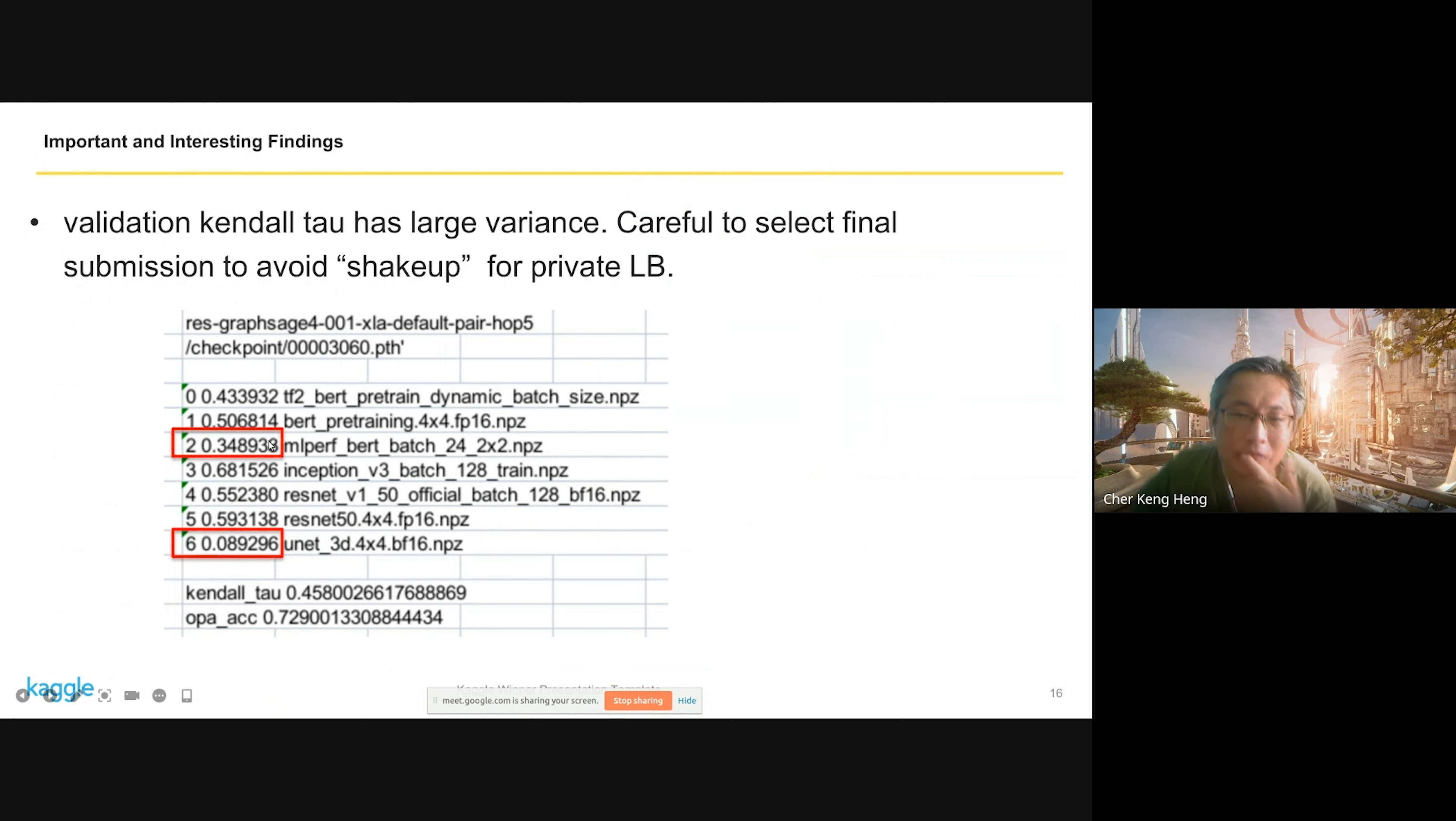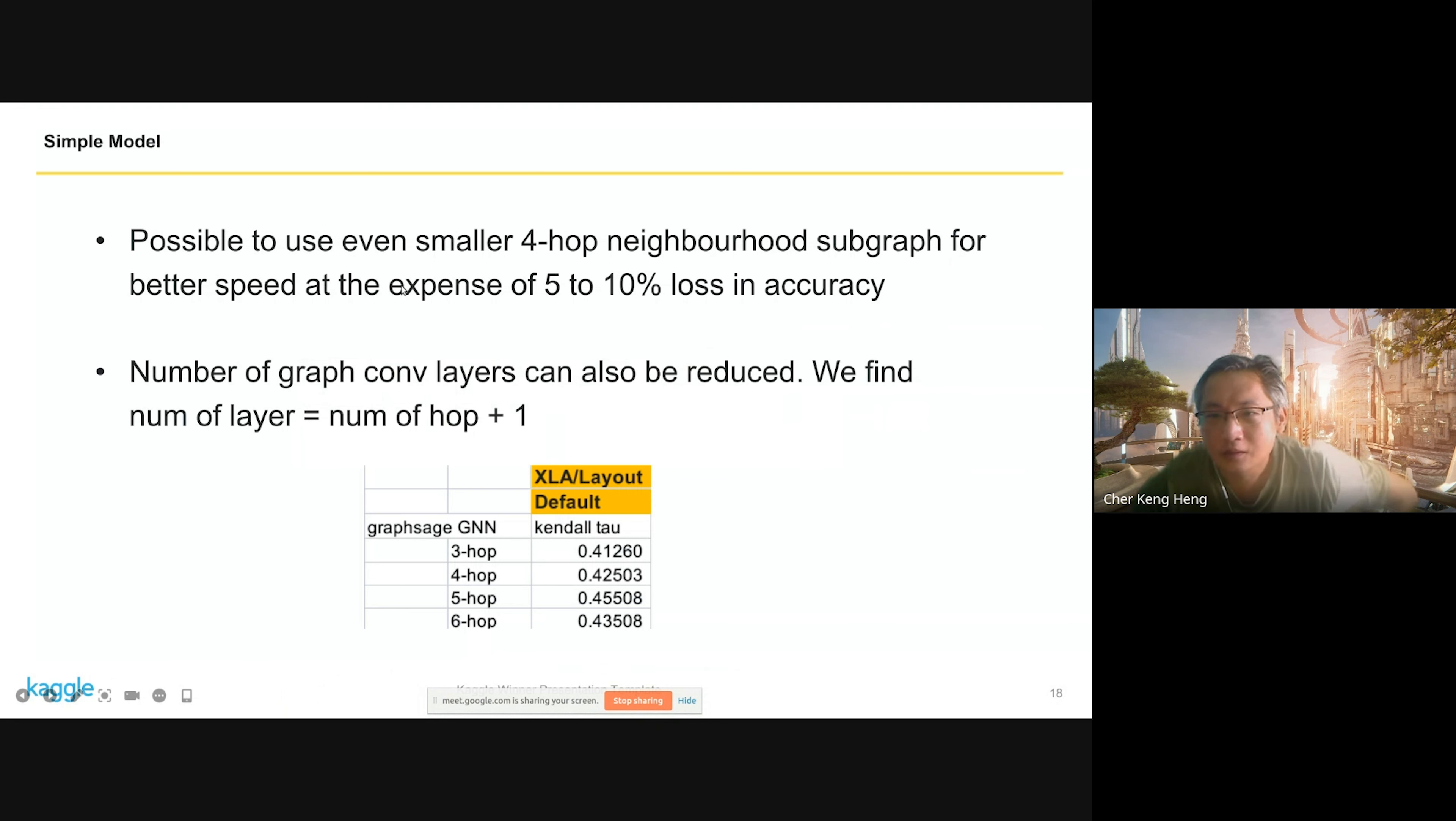The reason why I use ensemble for XLA is because I find that by ensembling, the worst case improved. Not necessarily all cases will improve, but the worst case improved. Due to limited time, I don't have time to try ensemble for all, but I tried especially for the layout default because I find in validation they have some very poor results. You can use simpler smaller hop size like four-hop, but you have better speed and depend on some loss in accuracy. Basically, number of layers is just number of hops plus one is good enough.